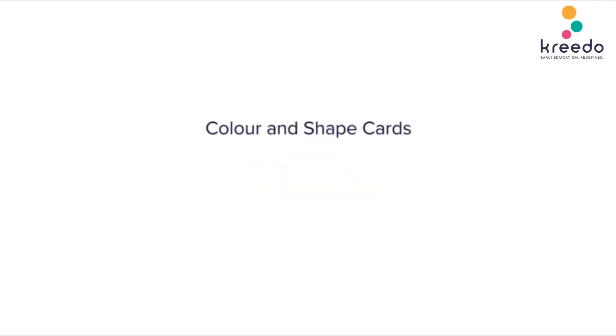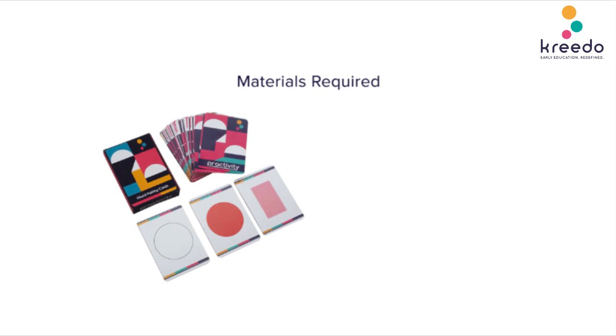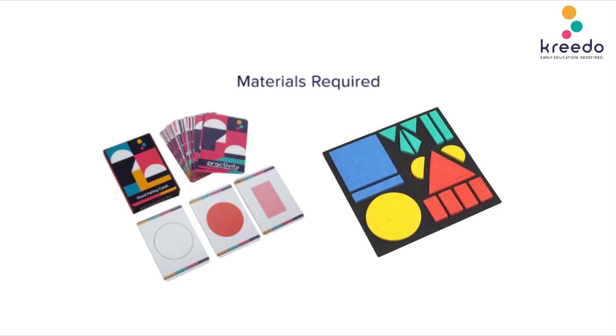Color and Shape Cards Game 82: Shape Association Memory. Materials required: Color and Shape Cards, Creative Geometry.